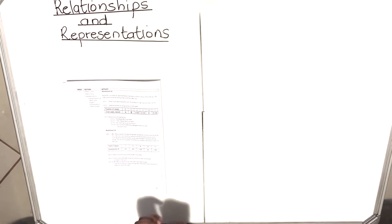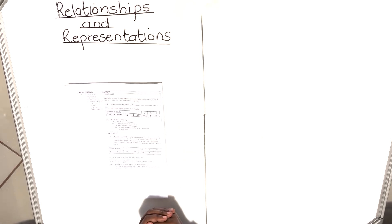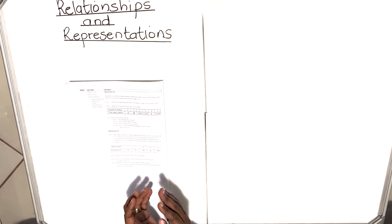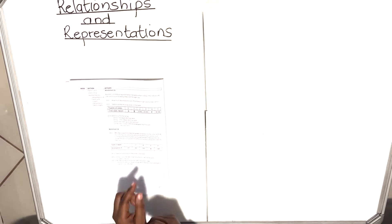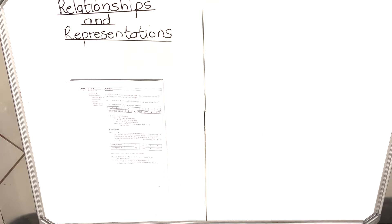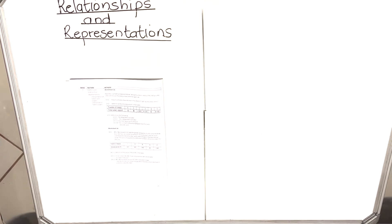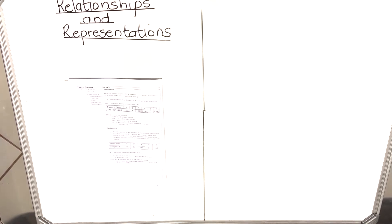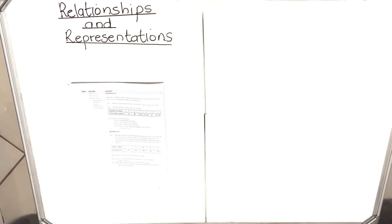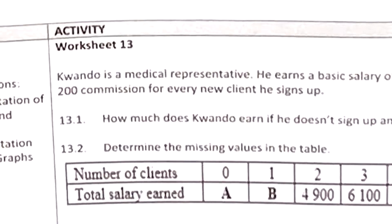Hello everyone, this is a video on relationship and representation. Data can be represented in tables, graphs, or information. In this question we are going to look at a table and how we can represent information in a table. We'll look at a worked example to explain this concept.